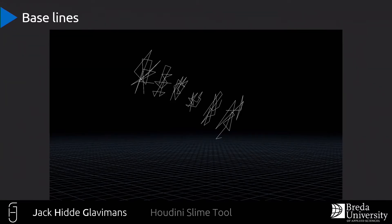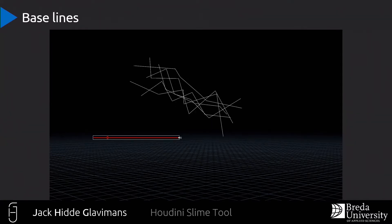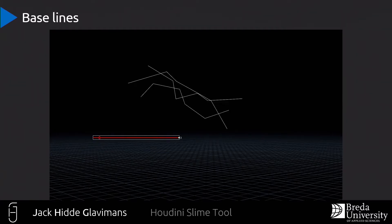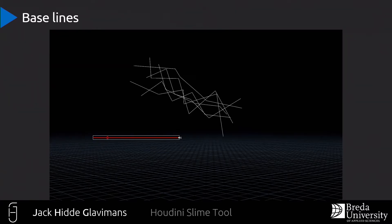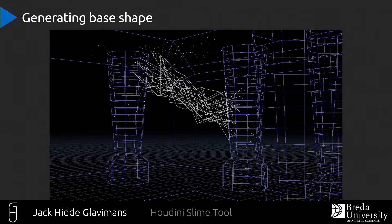The points are in primitives so there are separate lines, which enables me to loop over them. I can then connect each point from each line to their corresponding point in the next line to create lines along the curve. This is a user parameter, so the user can decide how dense their slime lines are.